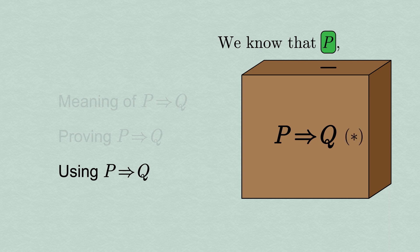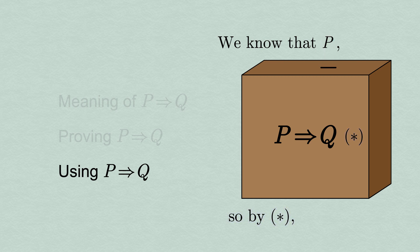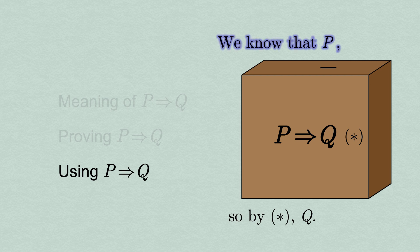Labeling the implication, we can then deduce that because the implication is true and its hypothesis P is true, its conclusion Q must be true as well. In short, justify P and conclude Q using that and the implication.